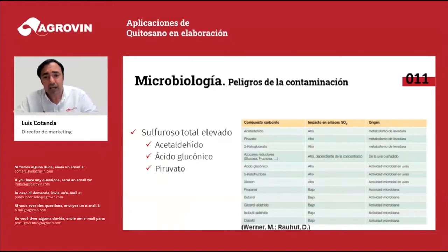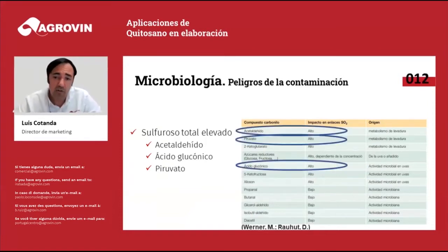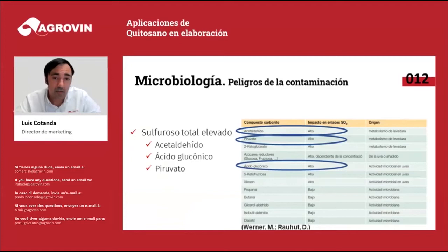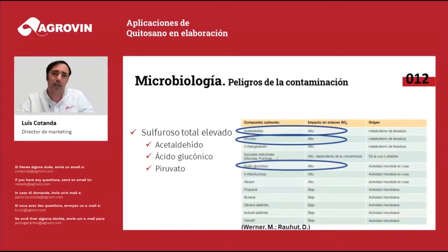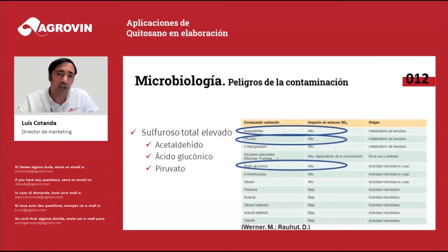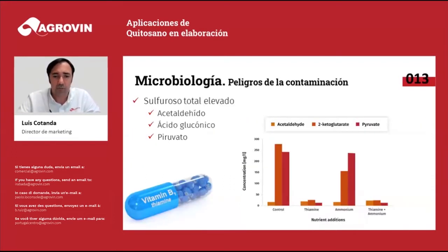Last but not least, there are acetic bacteria, and you know what they produce. Apart from these compounds, many more are known to be able to combine with sulfur dioxide, and some of them are produced by microorganisms. For example, grapes attacked by botrytis have very high levels of gluconic acid, but also pyruvate and acetaldehyde. If the levels of these compounds are high, it is going to be very difficult to reach the desired level of free sulfur dioxide compounds.